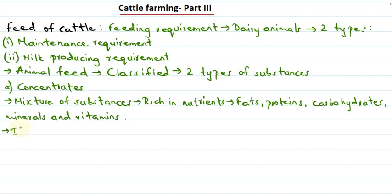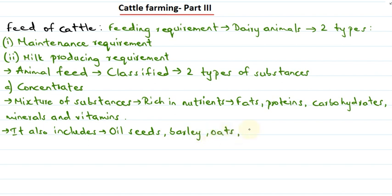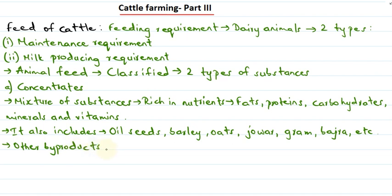The concentrates can include oil seeds, barley, oats, jowar, gram, bajra, etc. Other by-products may also be present, like gram husk, rice bran, etc.